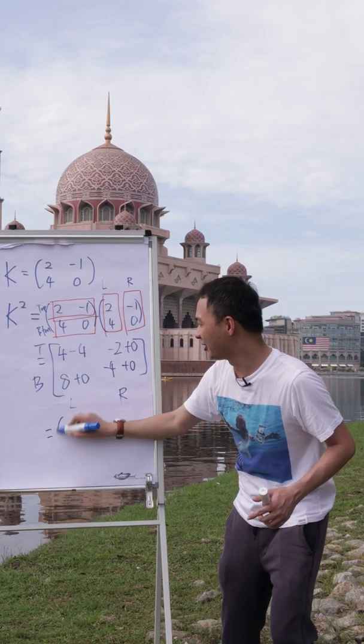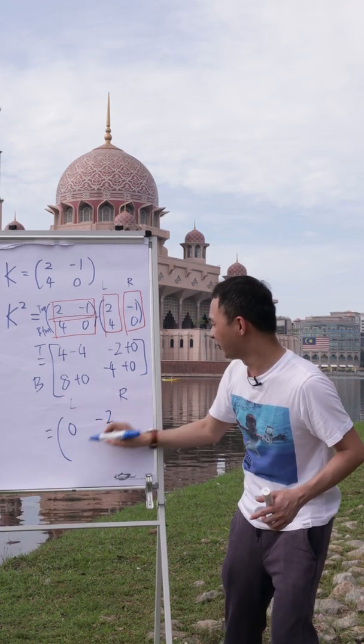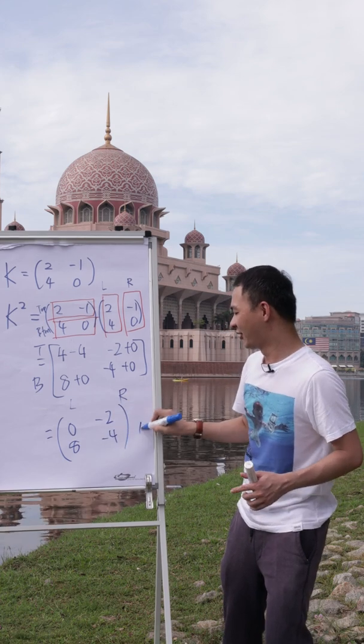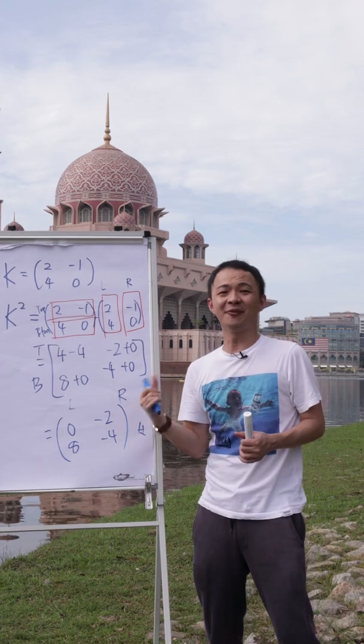So then I can easily get my result, which is 0, negative 2, 8, negative 4. Okay, this is how easy we do this kind of matrix question.